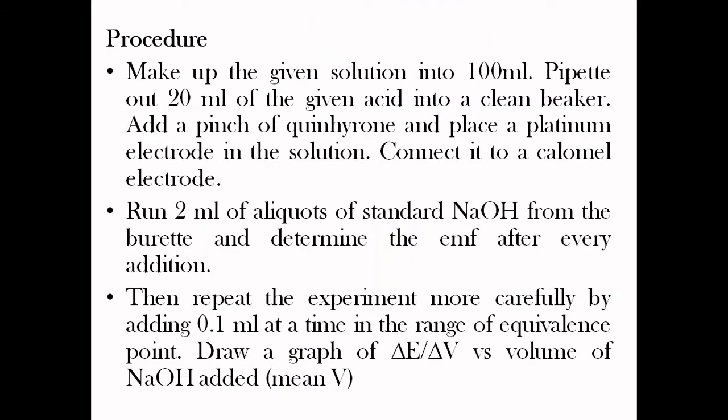This is the brief procedure for the estimation of acid-base potentiometric concentration. Take 20 ml of the given solution in a clean beaker, add a pinch of quinhydrone, and place a platinum electrode in the solution connected to a calomel electrode to form an electrochemical cell. Run 2 ml of standard NaOH from the burette and record the EMF of the cell after every addition. First perform a trial run; from the trial run, find the particular interval at which the equivalence point change occurs.